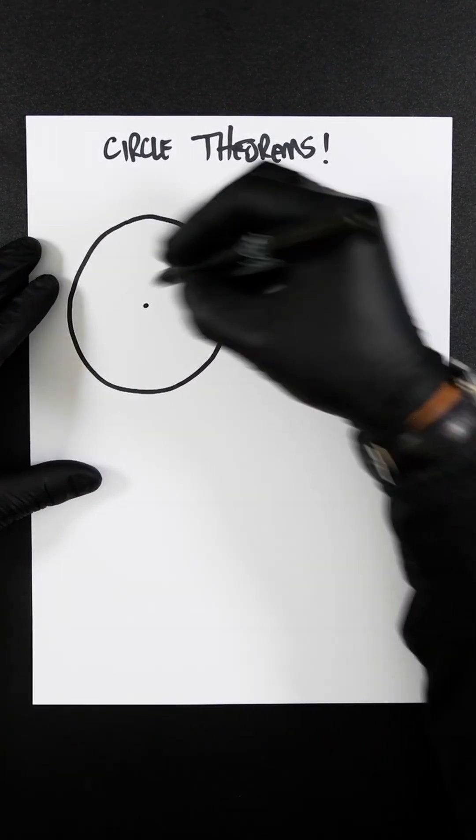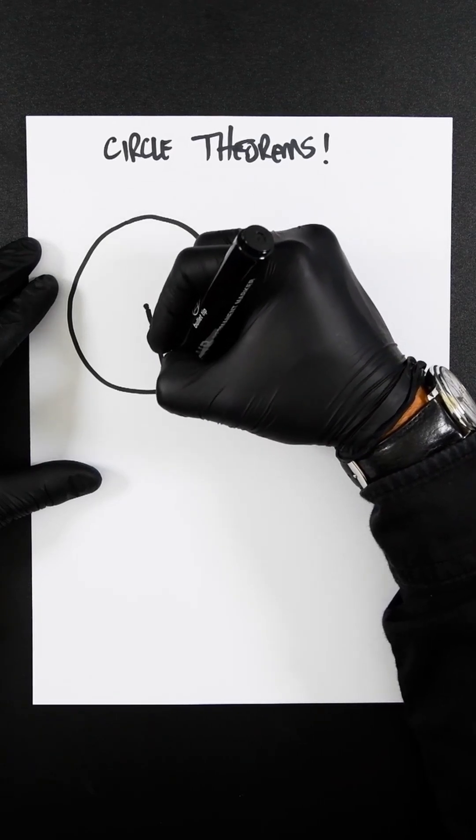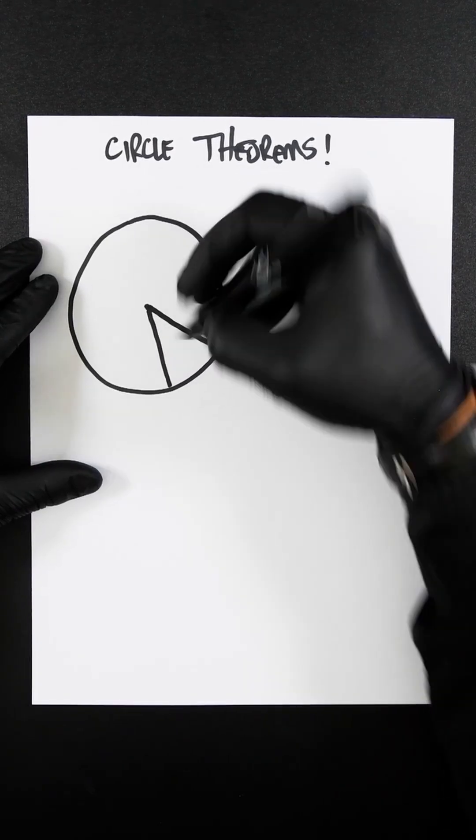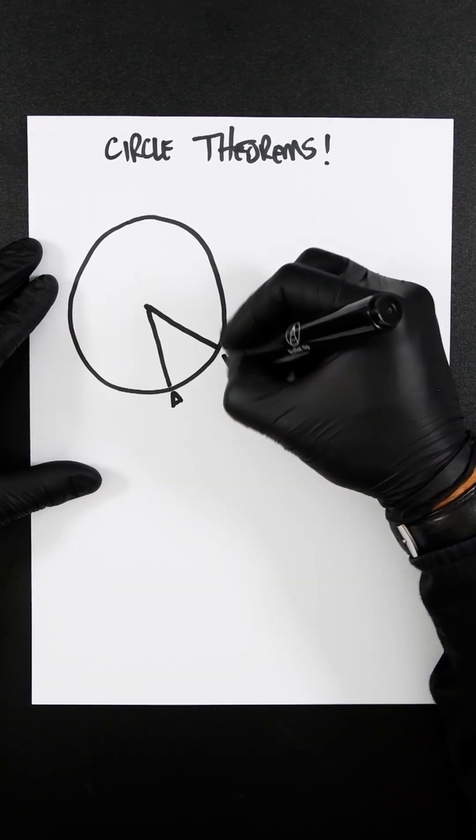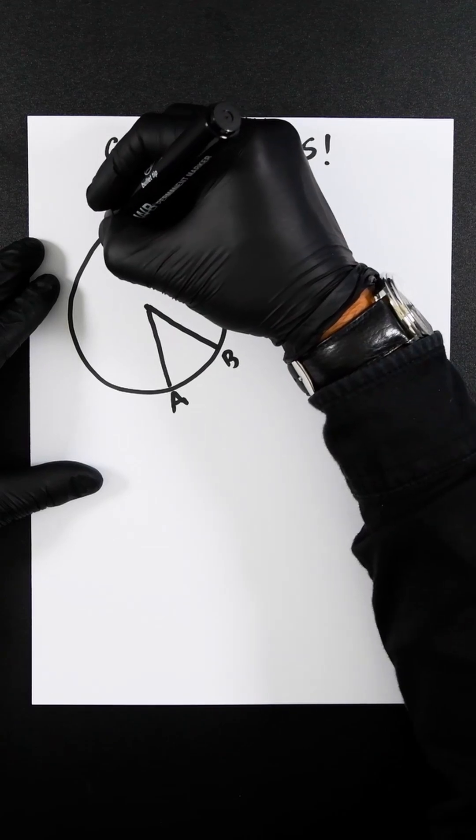Let's say that's the center, and that means we have a line going here and a line going here. It hits at point A and point B, and then we have a point here where they also meet here and here.